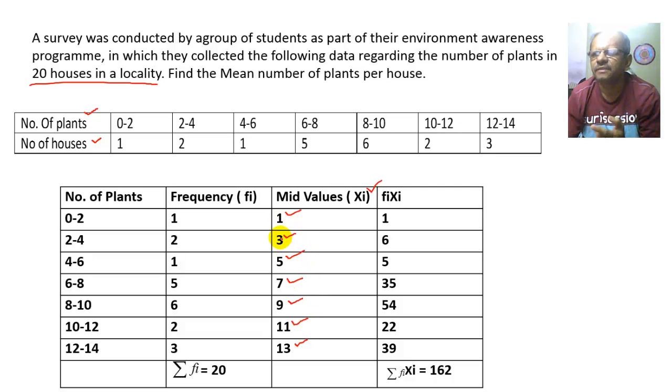So the mid values will be 1, 3, 5, 7, 9, 11 and 13. Now we find Fi Xi that is the product of Fi and Xi. 1 times 1 equals 1. 2 times 3 equals 6. 1 times 5 equals 5. 5 times 7 is 35. 6 times 9 is 54. 2 times 11 is 22. 3 times 13 is 39.